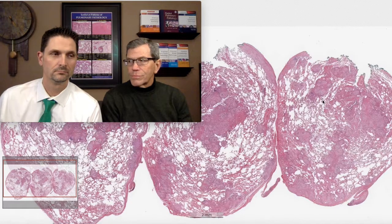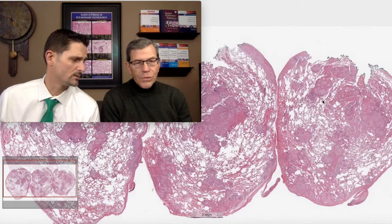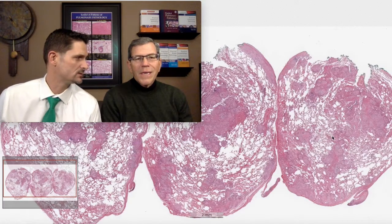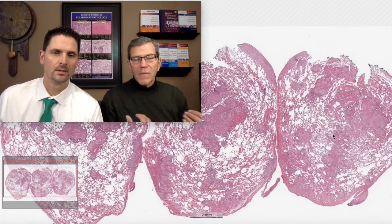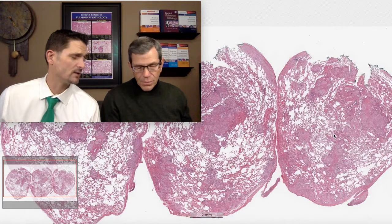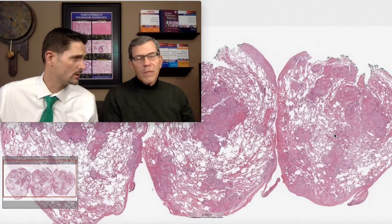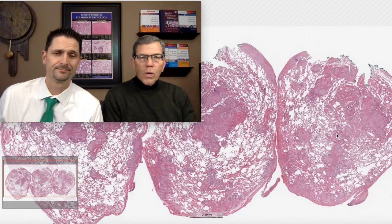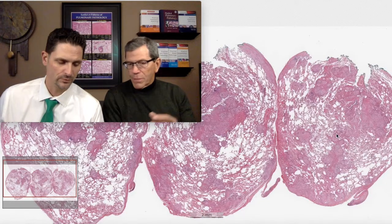A CT scan was done which shows bilateral nodules — small nodules. We're not talking about tumor nodules. They could suggest miliary metastatic disease, except they're in the mid and upper lung zones, and we know that metastatic tumor tends to involve the periphery of the lower lung zones because it's a vascular process. Vascular processes tend to be lower lung zones; inhalational disease tends to be upper lung zones.